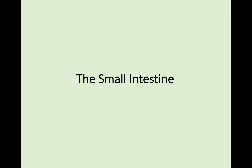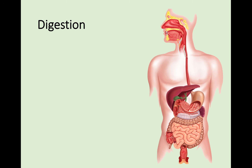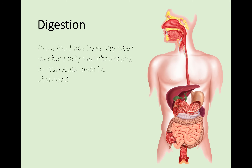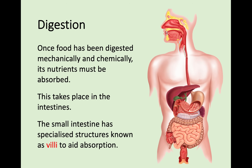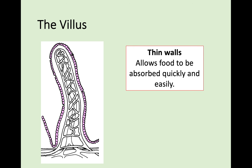The next bit we're going to look at is the small intestine. We're moving away from the lungs now and into our digestive system. We don't need a lot of detail here — we're going to be looking at the absorption part. Once food has been digested mechanically and chemically, its nutrients need to be absorbed, and that is the point of the intestines. The small intestine has little structures called villi — a single one is a villus — that aid absorption. Similar to alveoli, we're looking at one structure, but there are actually millions of these all around the small intestine. They are little finger-like projections that come out.